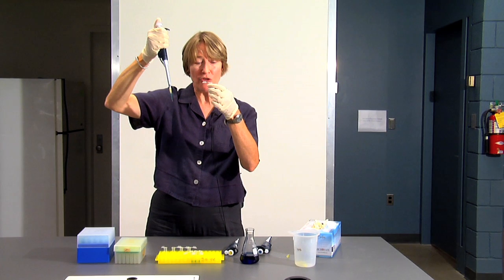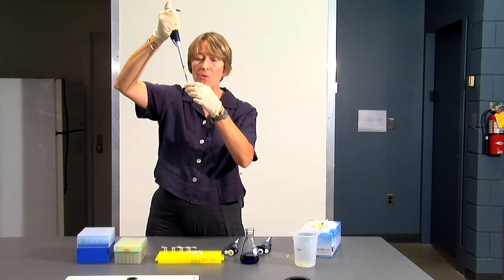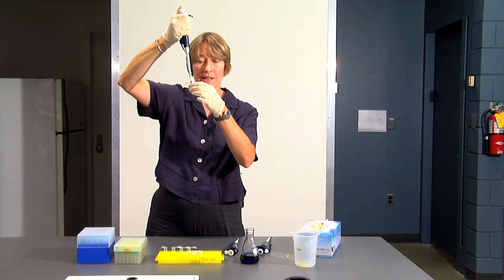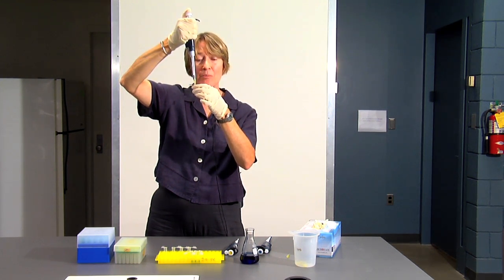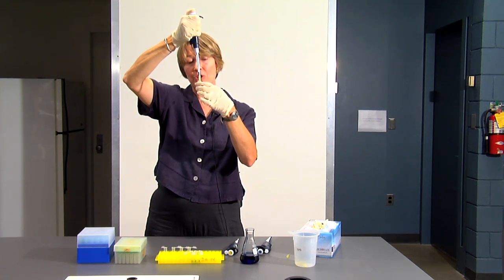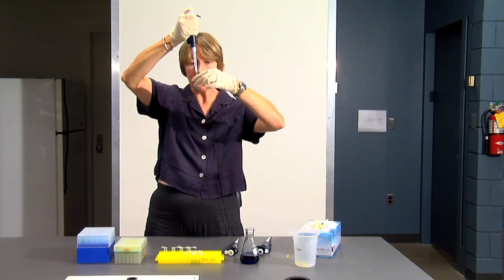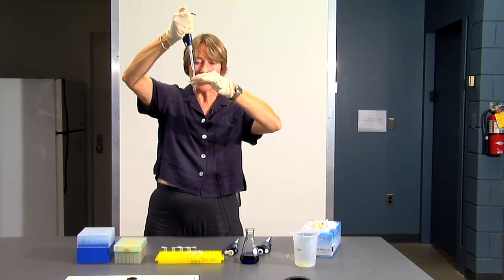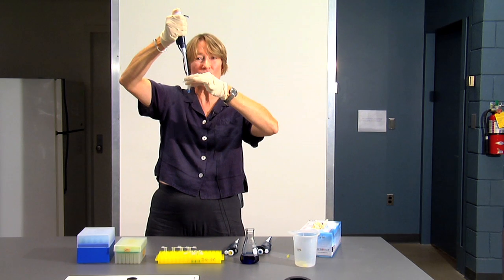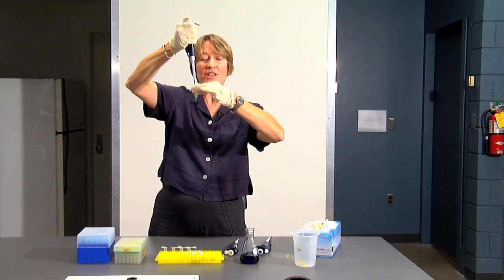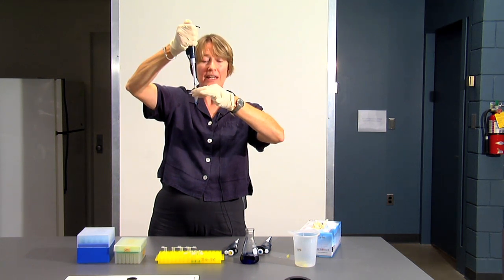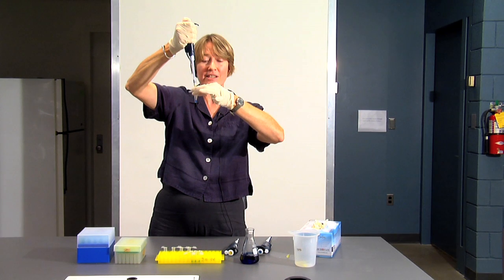I'll then take a microfuge tube and I will put the tip into the tube and I will now depress the plunger again and release the sample into the tube. And you may be able to see that there's just a tiny, tiny drop, hardly even noticeable, still left in the tip of the pipette. This is where you depress it to the second stop to push out that last drop.